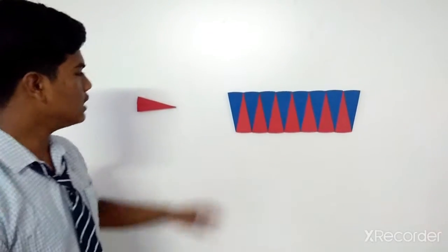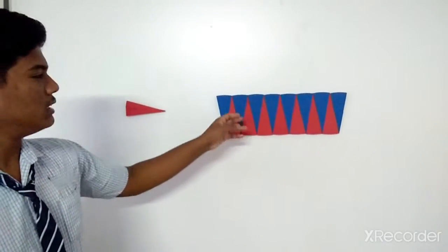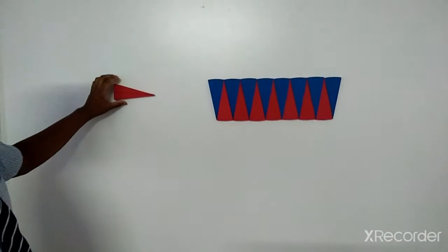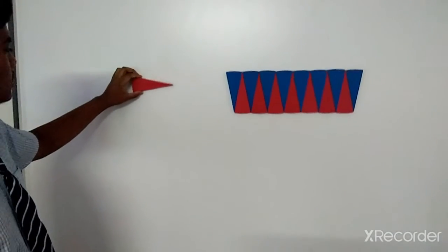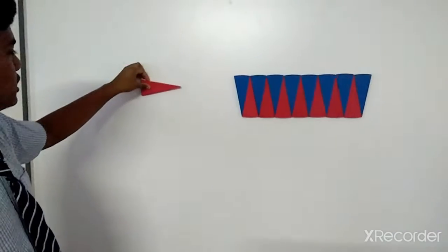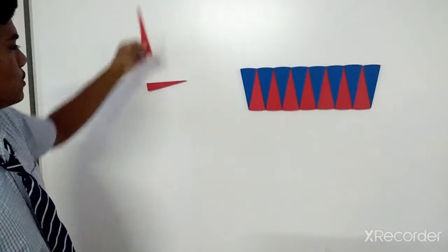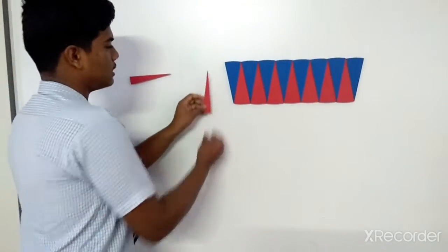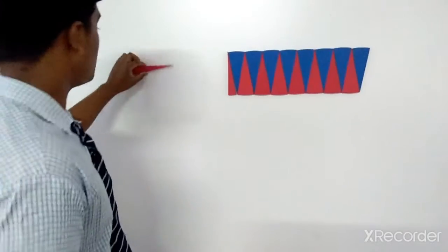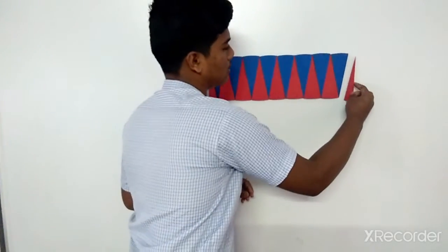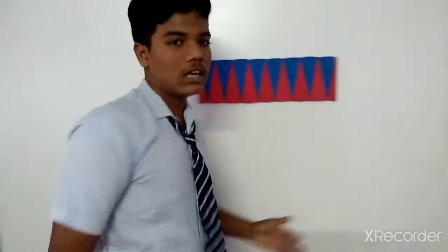After arrangement, now this figure like a trapezium, one part left. Now I divide in two pieces, one part arranged this way, another part arranged this way.